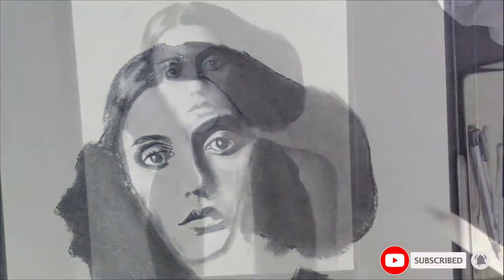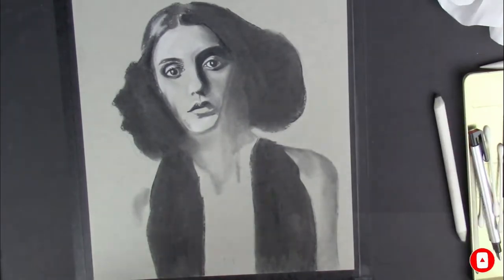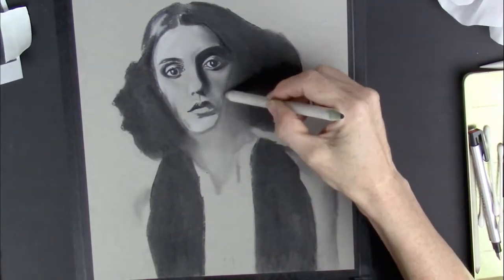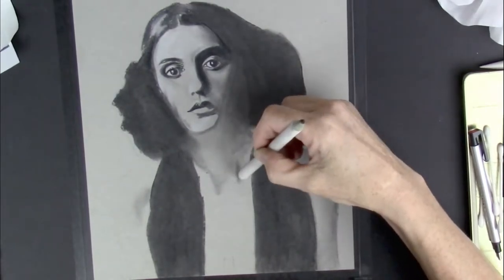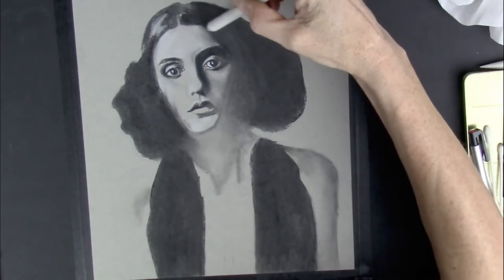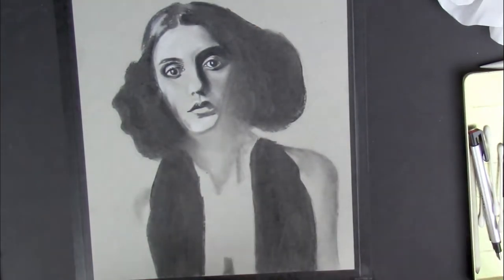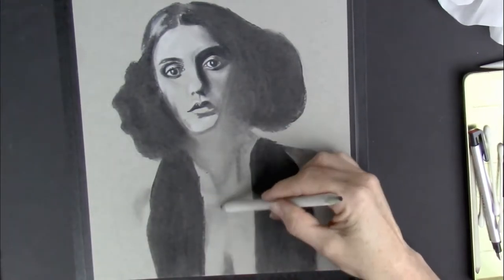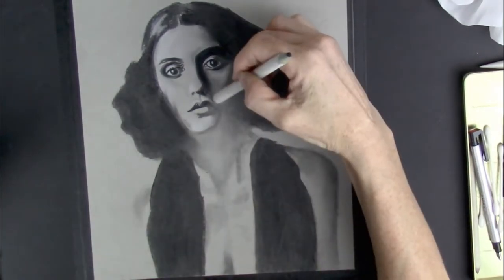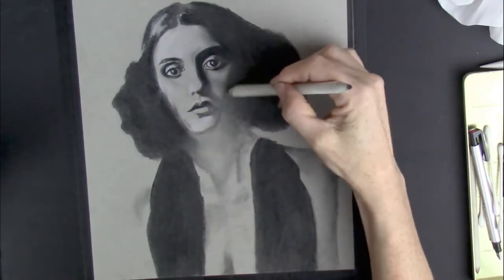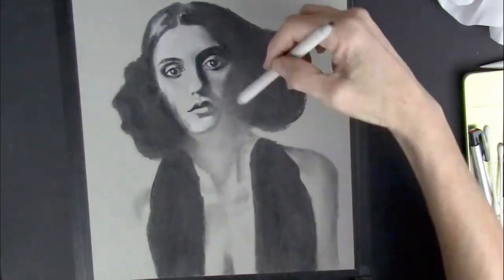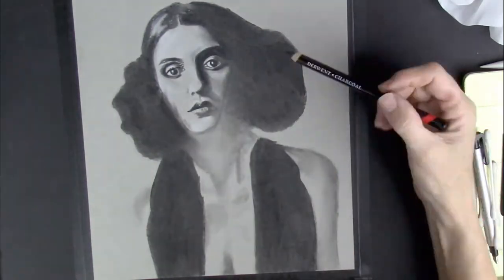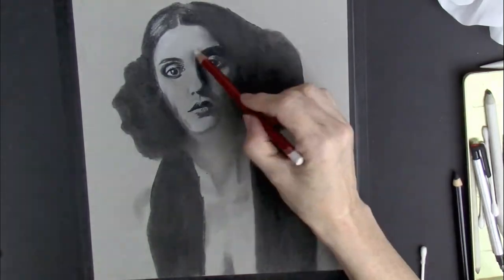I'm also blocking in some of the areas of her cheekbones, the side of her face, and also the main proportions of her dress and also her shoulders. And for this, I'm just using the big blending stump and using the charcoal that I've already laid down to put in some of those dark shadows and then blending out a little bit with either the tissue paper or the largest blending stump.